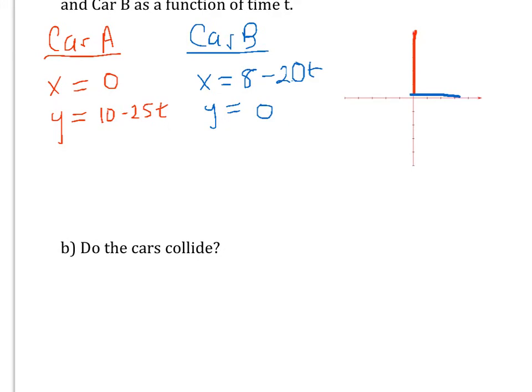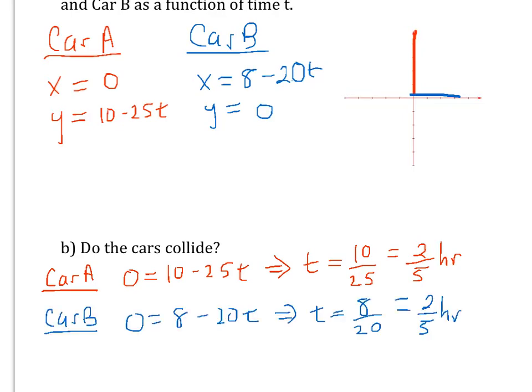The question then is, do the cars collide? Which means do they actually hit at the intersection? How would you do that? Well, you could see at what time they reach the intersection. Now notice for car A, x is always 0. So if you set the y coordinate of car A equal to 0, you get that car A hits the intersection at 2/5 hour. Then you set the x coordinate of car B equal to 0, because the y coordinate is always 0. And lo and behold, you find that it reaches the intersection at exactly the same time. So the answer to the question is yes. The next question is, do they have insurance, I guess?